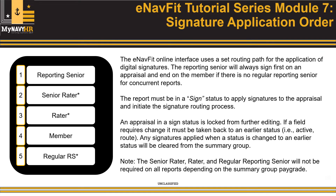If the summary group is placed back into an earlier status, all signatures that have been applied will be cleared from the summary group reports. Note that if a senior rater was not selected on the reviewer's template for E1 to E6 appraisals, placing a summary group in assigned status will automatically apply the alternative signature of 'None Available' to the senior rater on the appraisal.